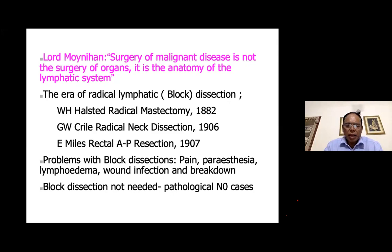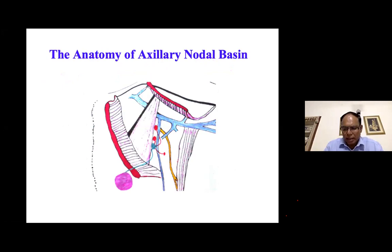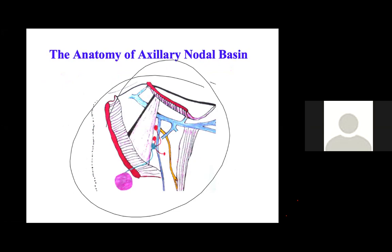People realized there were a lot of problems with block dissection. Imagine when all the nodes in a block dissection show no cancer cells — you feel really stupid having performed such a major operation and found that all the nodes do not harbor cancer cells. There were significant problems associated with radical node dissection of any organ.